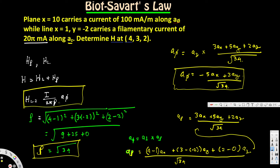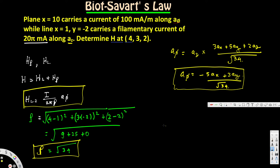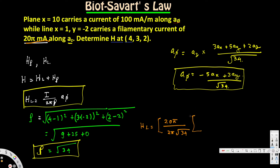H_L = 25 mA / (2π × √34) × [(-5a_x + 3a_y) / √34]. The √34 terms combine in the denominator. Simplifying gives the x and y components of H_L. We keep the milli prefix throughout.